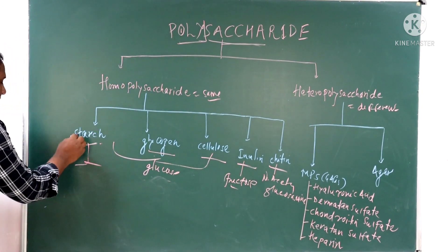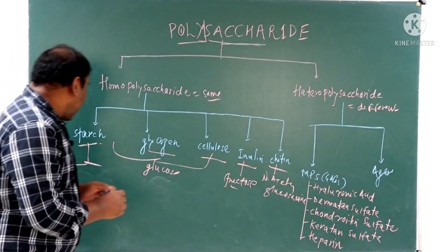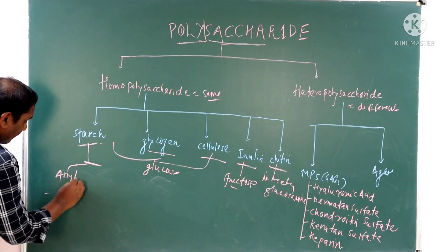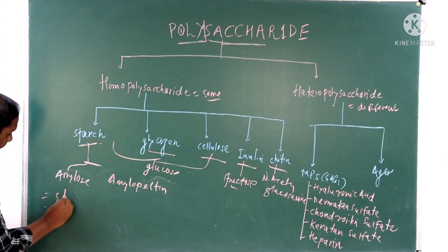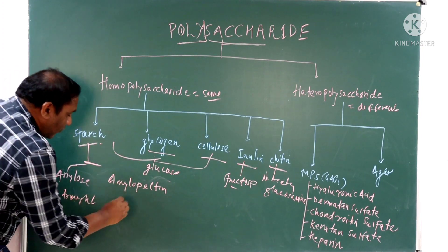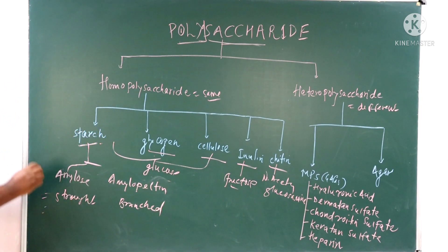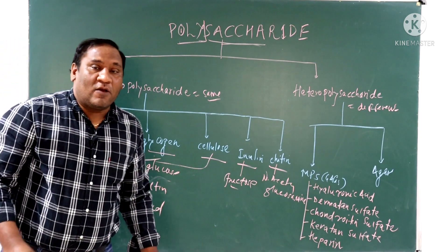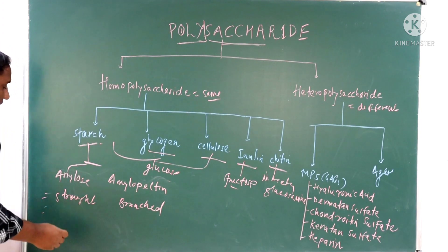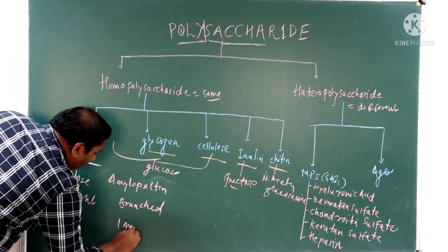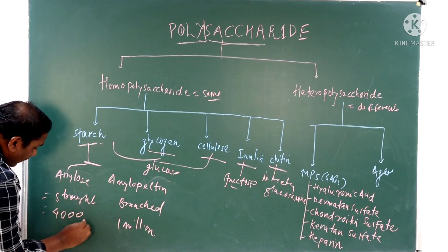Starch is a homopolymer of glucose and the storage form of carbohydrate in plants. It contains two parts: amylose and amylopectin. Amylose is a straight-chain structure and amylopectin is a branched-chain structure. Amylose is water soluble, while amylopectin is water insoluble. The molecular weight of amylopectin is more than one million, and the molecular weight of amylose is around 4,000 daltons.